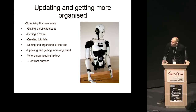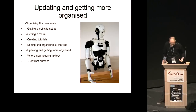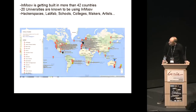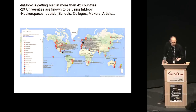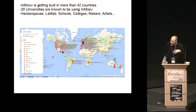People are downloading the files and reproducing this robot and the hand for many projects — many of which I'm not even aware of. We created a map where people can say where they are and what they're building. At the moment, more than 42 countries are building a hand or a robot, and at least 20 universities are involved, using sensors on heads, fingers, and muscles.